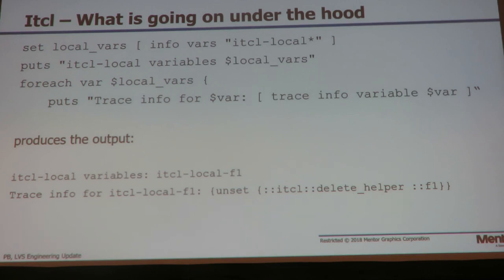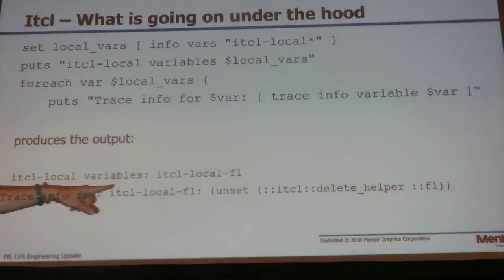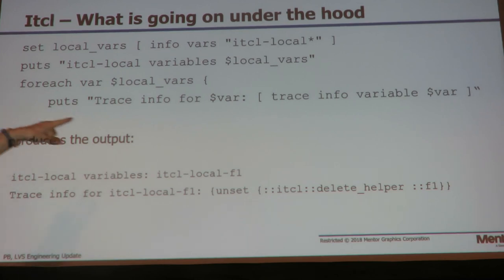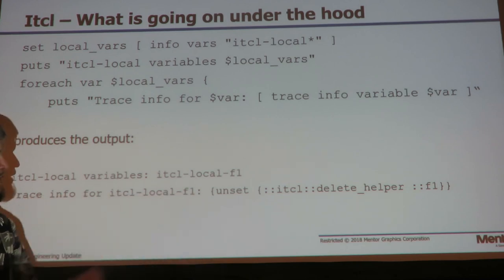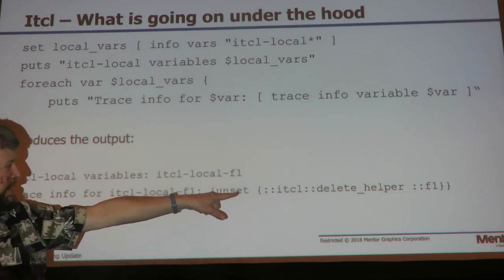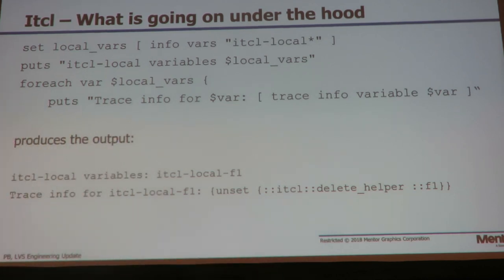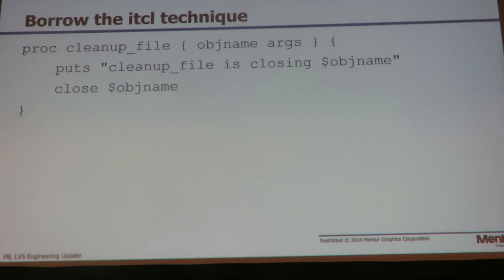If you use the info command to see what's going on and suspected trace was involved, you find out there's a special magic variable: iTcl_local dash the name of the thing you're trying to trace. Using info variable to find the trace information, you find there is an unset trace on that special variable — iTcl_local_F1 — and it's iTcl_delete_helper. So it's actually still creating a global object, but it just sets this trace. You can roll your own version of that — you don't have to use iTcl.